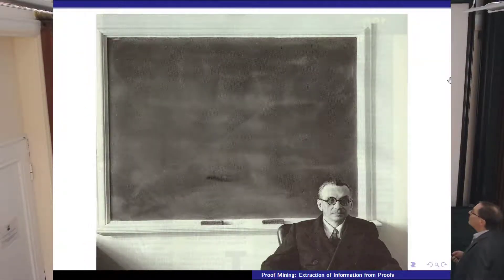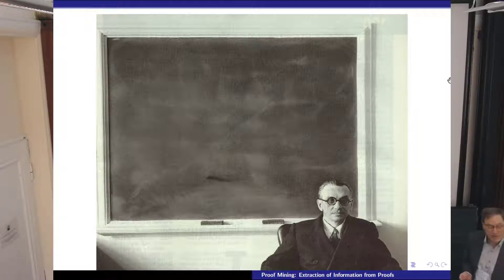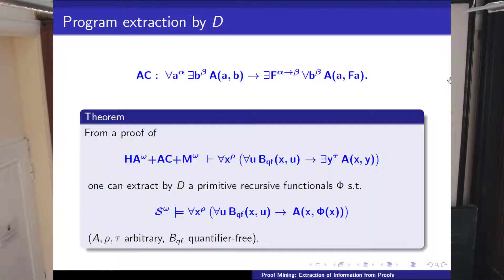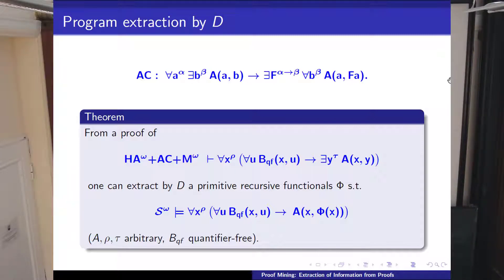What is now the main program extraction result? We can have the full axiom of choice, but now the clue is we can add, in addition, the Markov principle. As I said, for the Markov principle to be just negative is not enough—you have to be purely universal at the premise, because using the Markov principle, every existential statement would be negative, since you can write it as not-not-exists, and then it's negative, which is not allowed.